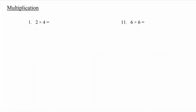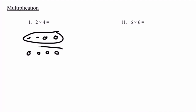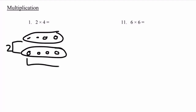Our third topic is multiplication, and it's asking us to multiply the numbers below. Number 1: 2 times 4. 2 times 4 can also be referred to as 2 groups of 4. Let's draw it out so it's easy for us to understand — two groups of 4 circles each. We now have 2 groups of 4 circles. Let's add it all together: 1, 2, 3, 4, 5, 6, 7, 8. 2 groups of 4 has a total of 8. Thus, 2 times 4 equals 8.